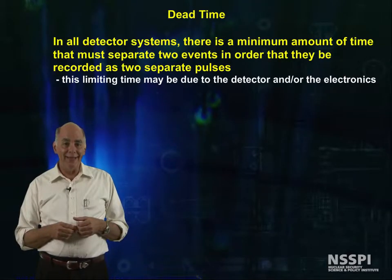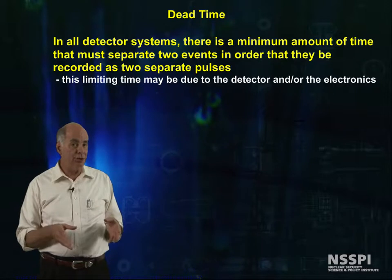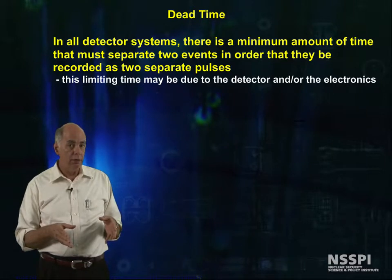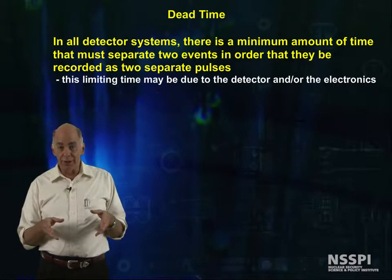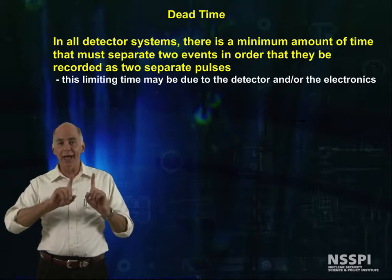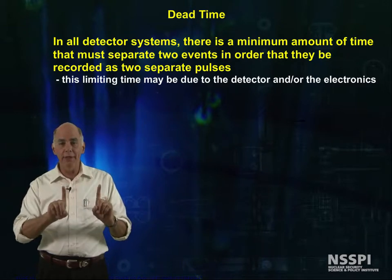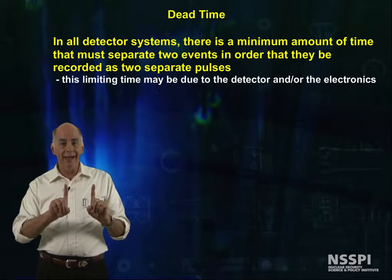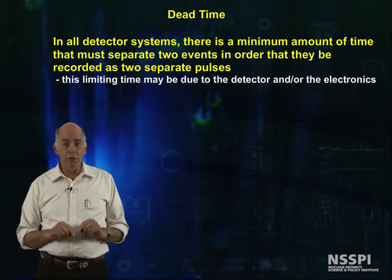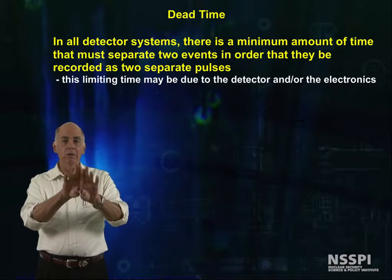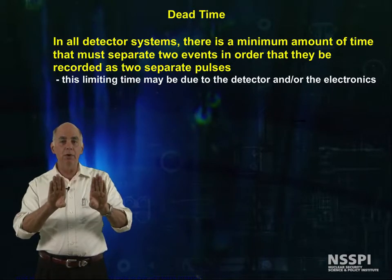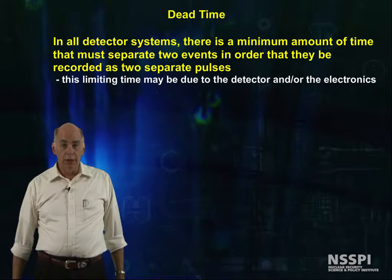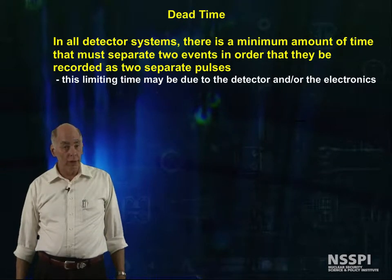One correction that you might not think about is the effect of the count rate itself. For all pulse-type detectors, there has to be sufficient time between the pulses or the count rate gets screwed up. Pulses that overlap get counted as a single pulse, so that the count rate will be low.